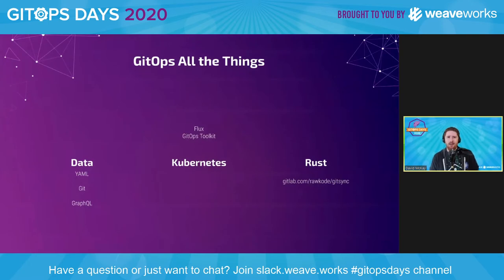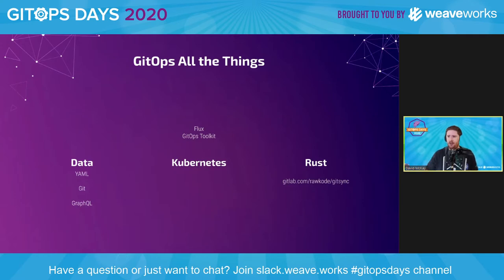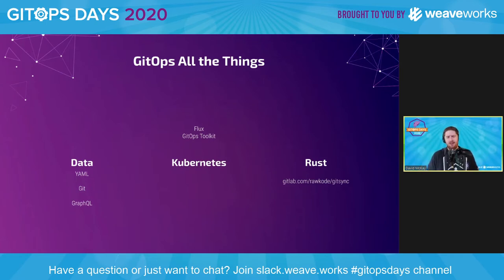A little bit more about my GitOps journey: I use GitOps for a lot of different things. It's very prominent within Kubernetes deployments. I also do some other really weird stuff — I like to store my data in GitOps, and to facilitate that I've been working on a Rust library. Check out gitlab.com/rawcode/gitsync. I try to provide live databases, reloading YAML files from git — it's a really cool concept.